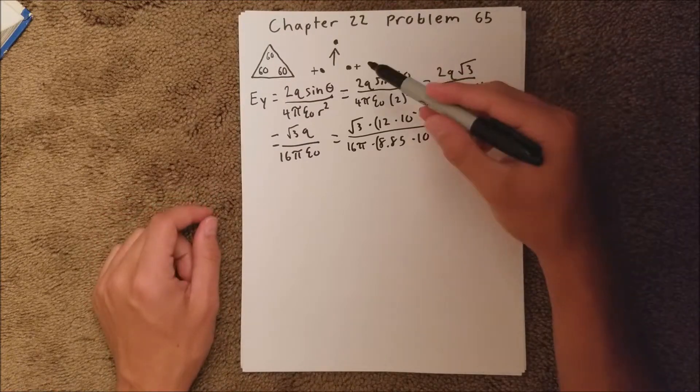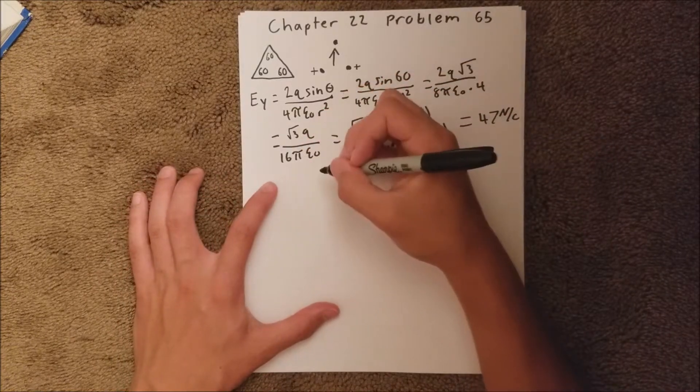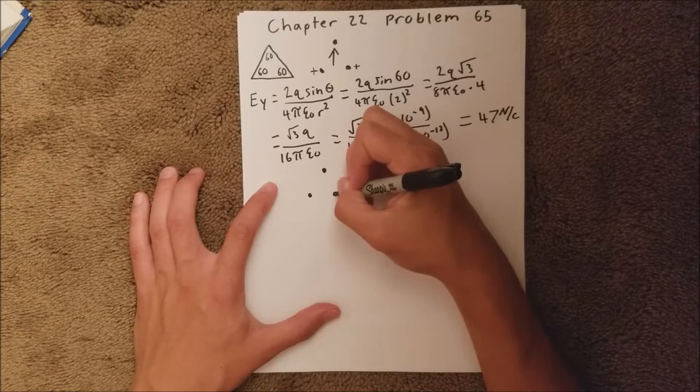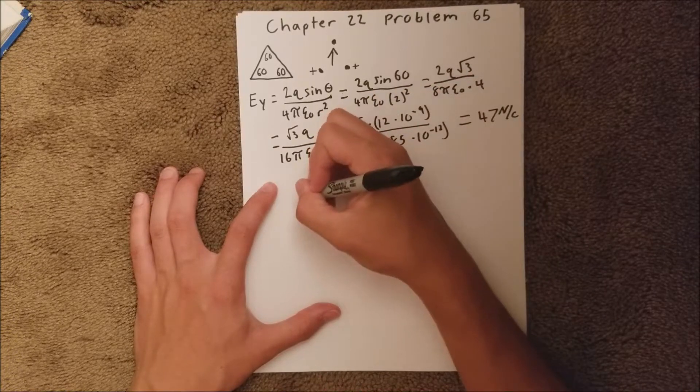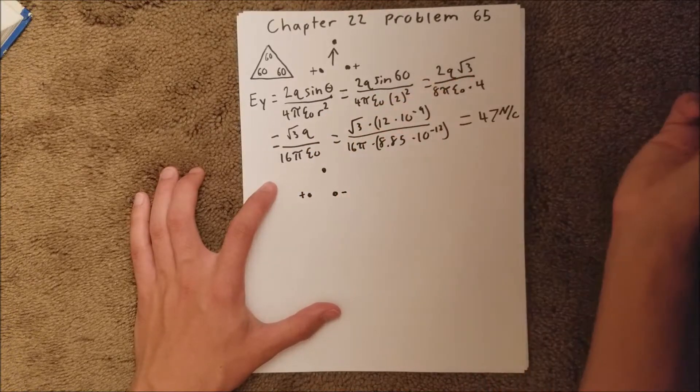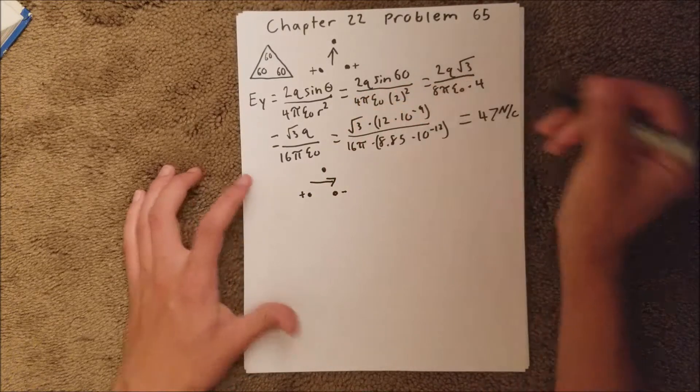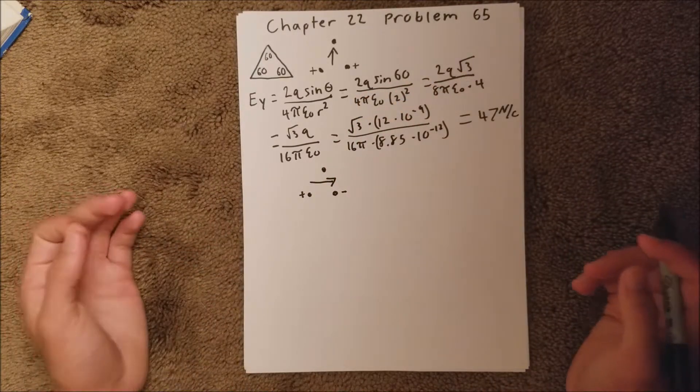In the next situation, we have another one of those charge triangles, but we are told that the left one has a positive charge, and the right one has a negative charge. So in this case, the electric field is going to go that way, but to the right, or all in the x direction.